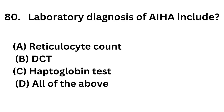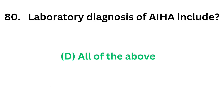Question 80. Laboratory diagnosis of autoimmune hemolytic anemia includes: Option A: Reticulocyte count. Option B: Direct Coombs test. Option C: Haptoglobin test. Option D: All of the above. The correct answer is Option D. Laboratory diagnosis of autoimmune hemolytic anemia includes reticulocyte count, DCT, and haptoglobin test.